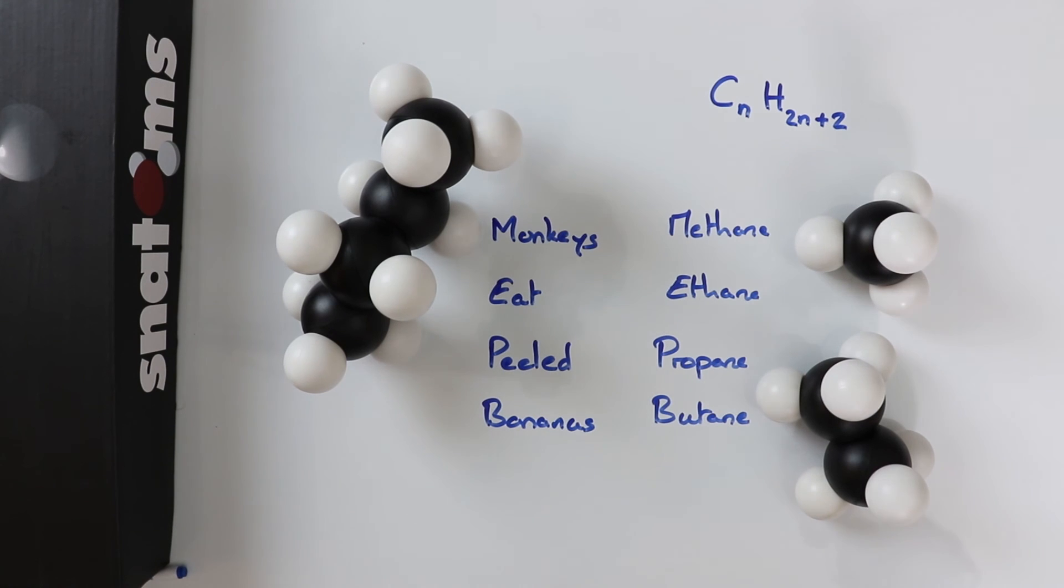Then the next longer chains are liquids, octane being the most familiar: petrol. As the chains get longer, the molecules get harder to burn and produce more smoke. The longer chains also become more viscous, stickier, and harder to flow.